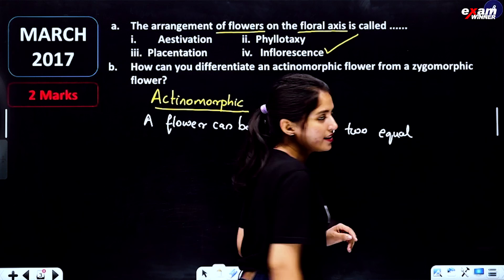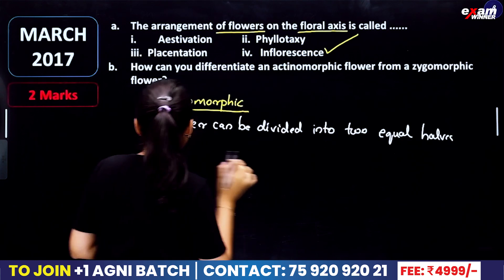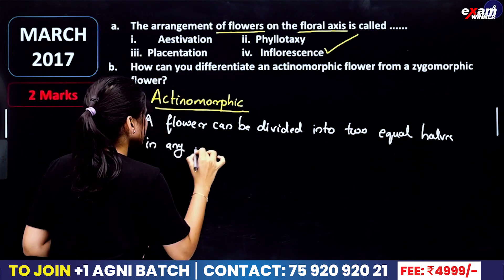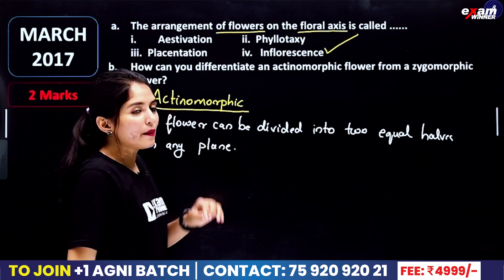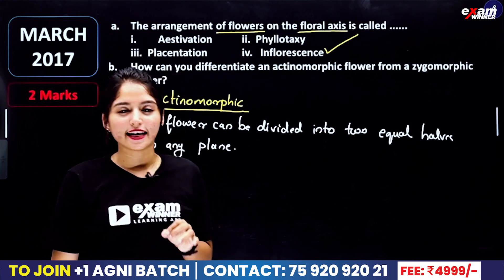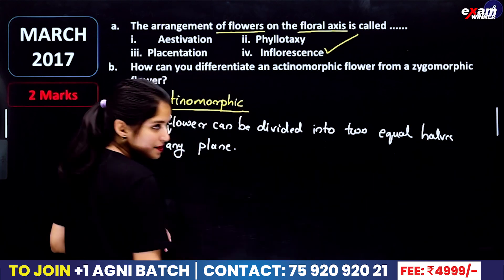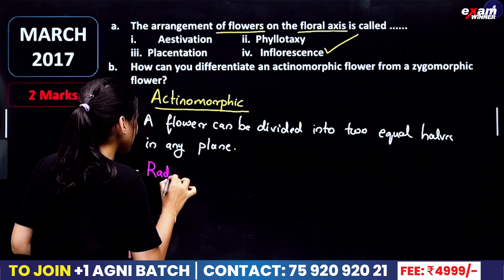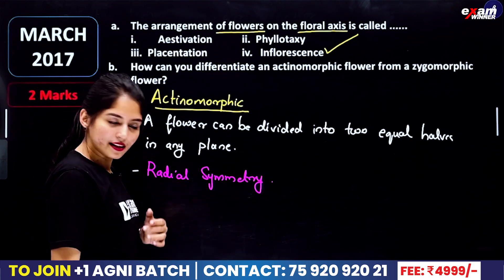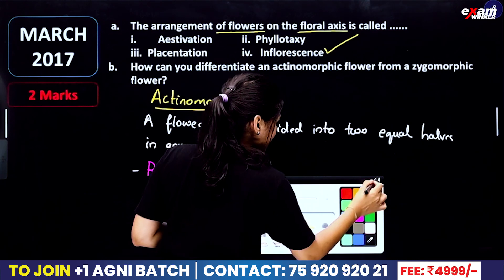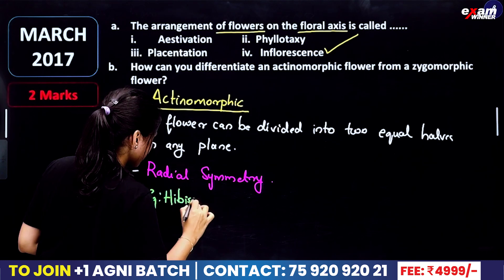You can divide into two equal halves through any plane. If we divide through any plane, we get two equal halves — this is the actinomorphic flower. What symmetry is there? Radial symmetry. For example, Hibiscus.